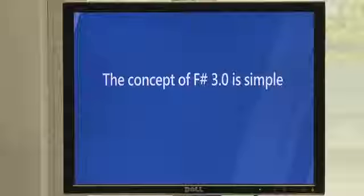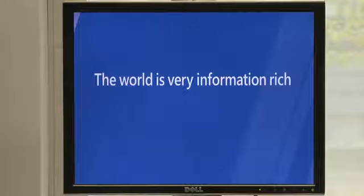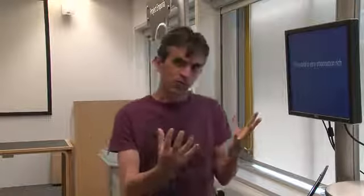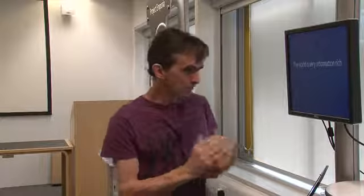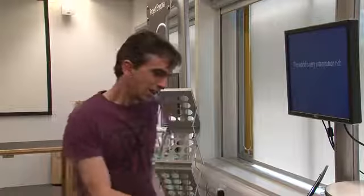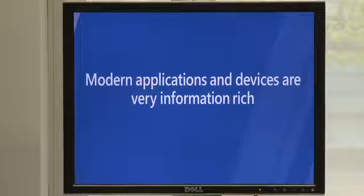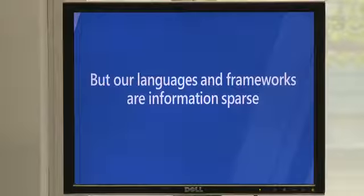Something that the lab here at Cambridge is very proud to be contributing to at Microsoft. The idea behind F-Sharp 3.0 is extremely simple — it's about information and programming, combining the experience of rich information spaces into the routine of the programming activity. We all know the world is extremely information rich, but there's a corresponding problem in programming: our languages and frameworks are, in a sense, information sparse.